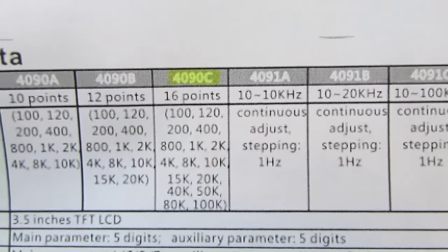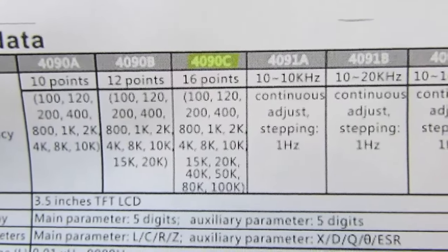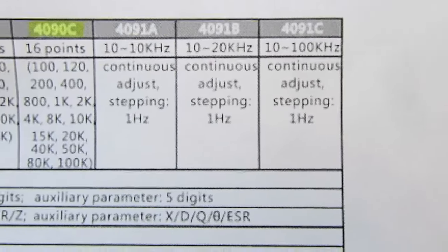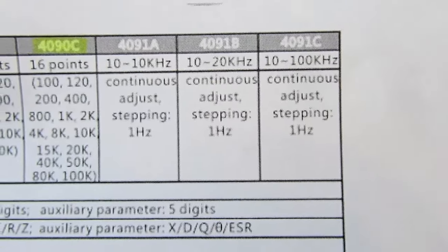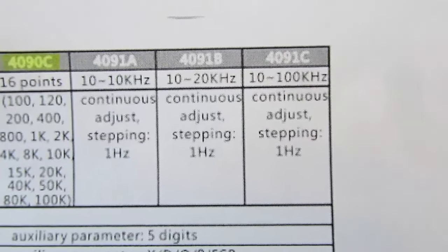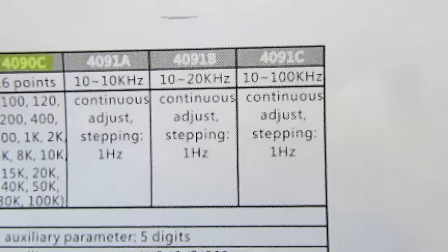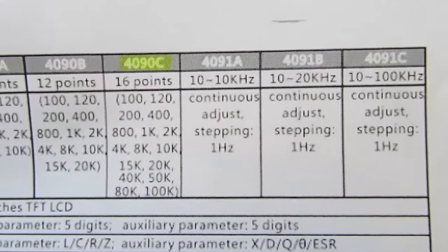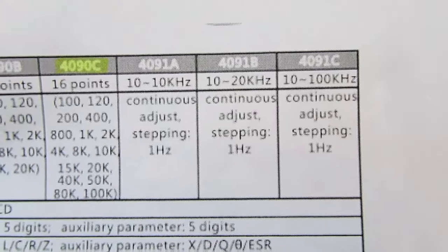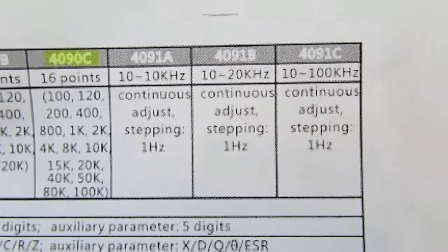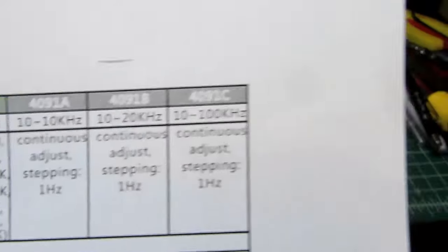I'd actually ordered a 4090C and was surprised that I received a 4091C. I wasn't sure I wanted that one. I didn't have a manual that would tell me, and I hated the idea because it says stepping 1Hz. I thought, I don't want to be stepping 1Hz at a time from the lowest frequency up to 100kHz. So I had to go back through Amazon, and they explained that no, you can do it that way by incrementing, but the preferred method is to enter it on the keypad.